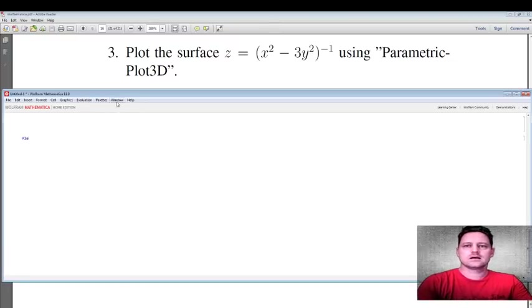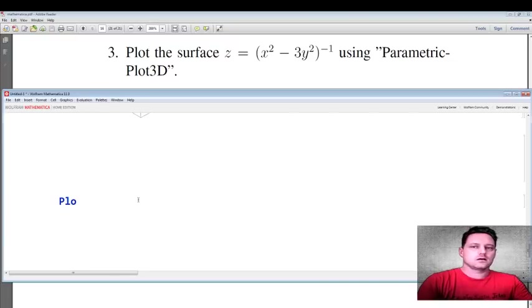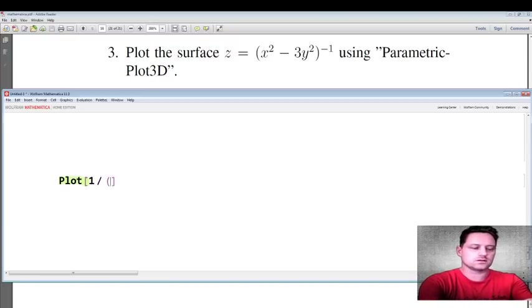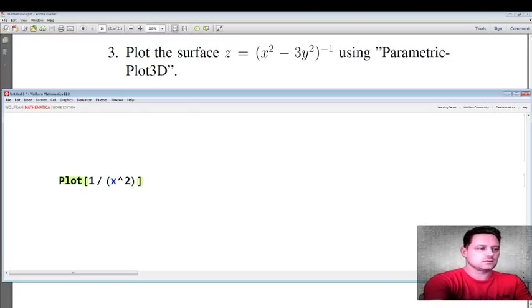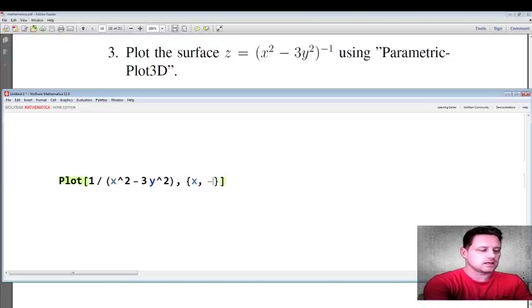Let's do this in a couple of ways. We'll first do this just by saying to plot the inverse, so one on this is the multiplicative inverse of x² minus 3y². Let's plot this in the range minus 5 to 5 for x, and let's do the same for y.